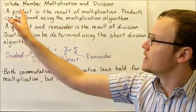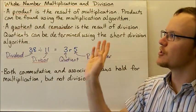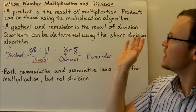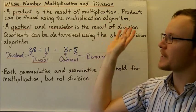Today we're going to look at whole number multiplication and division. A product is the result of multiplication. Products can be found using the multiplication algorithm.